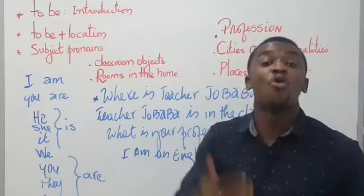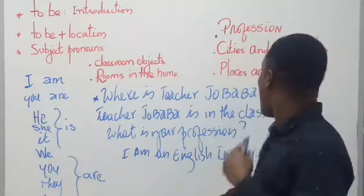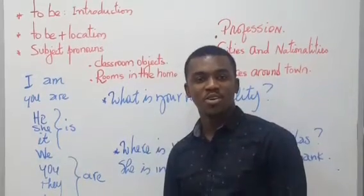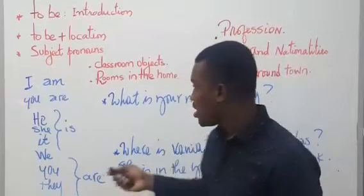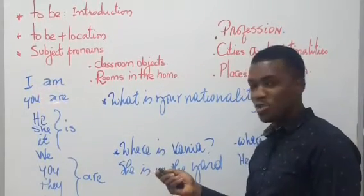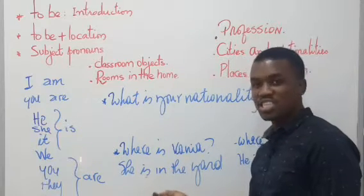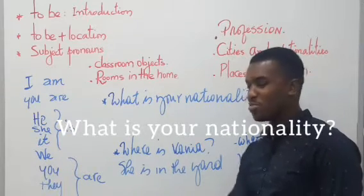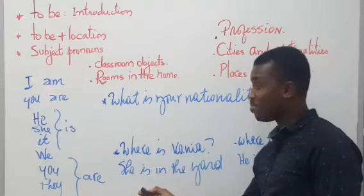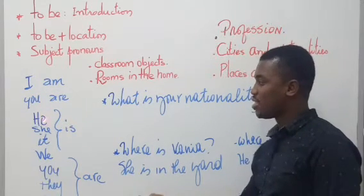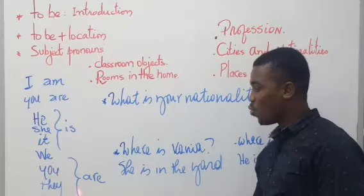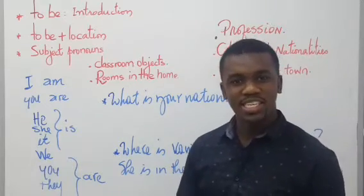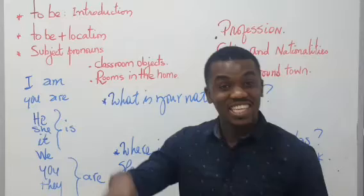Now let's practice the conjugation of 'to be.' Repeat after me: I am, you are, he is, she is, it is, we are, you are, they are. For example: I am in the English class. Where is Teacher Nixon? He is in the office.